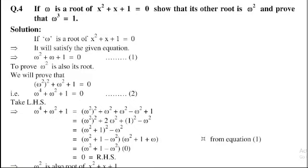Solution: If omega is a root of x² + x + 1 = 0, it will satisfy the given equation, that is omega² + omega + 1 = 0. This is equation number 1.